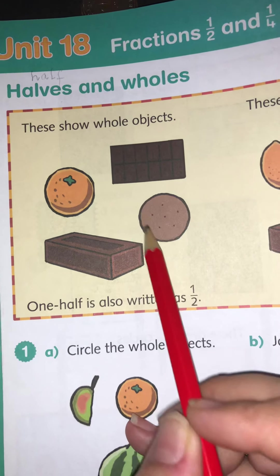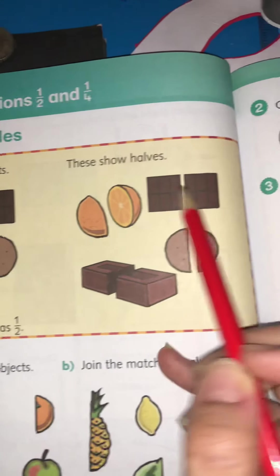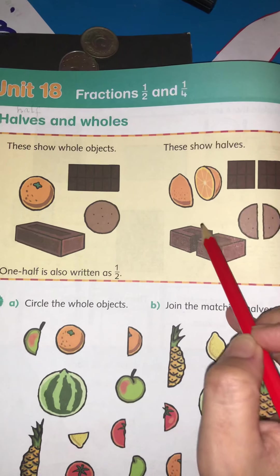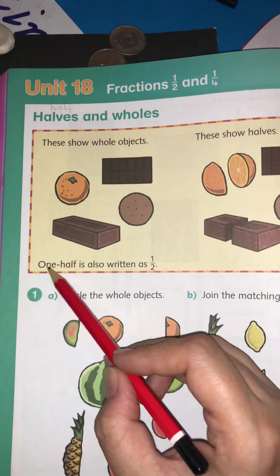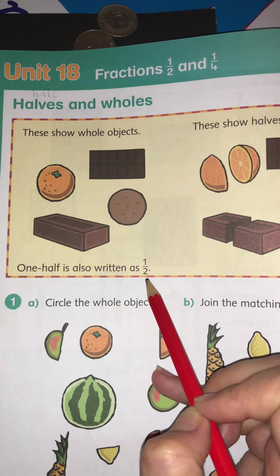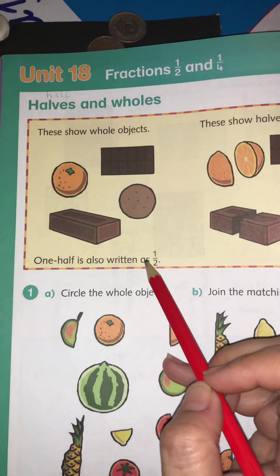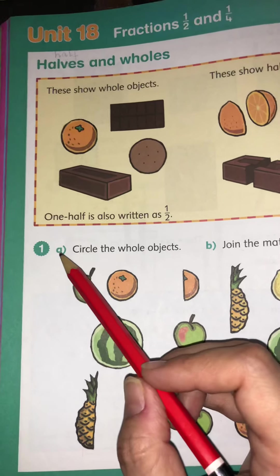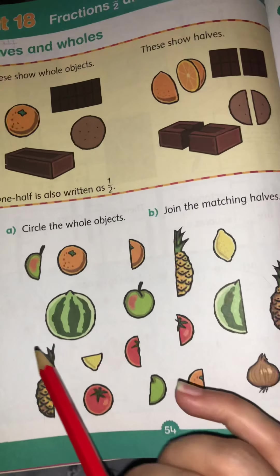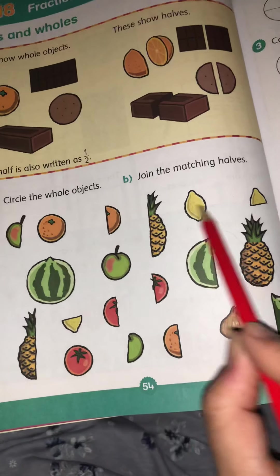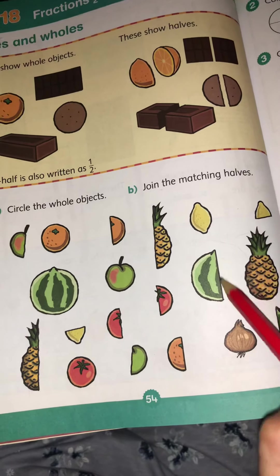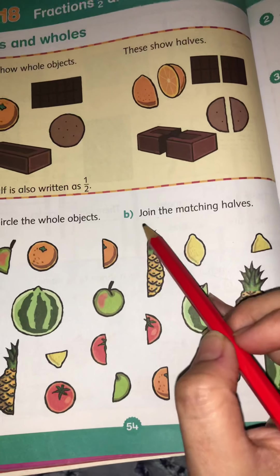And then this is a cookie. And then these show the halves of the same thing. Can you see the half of the same things? Now 1 half is also written as 1 over 2. We discussed them during our class time. Now question number 1, part A: Circle the whole objects. So we have to see from A and B, both of them. You have to circle the whole object as a whole. And now part 2, what we have to do?